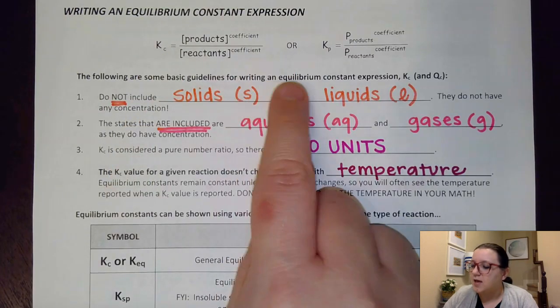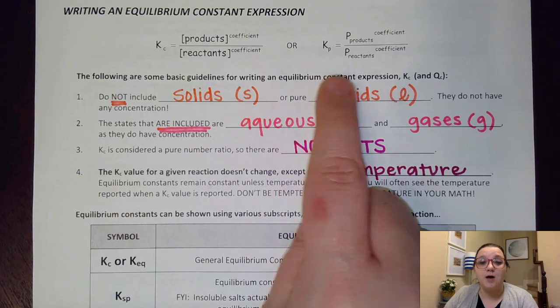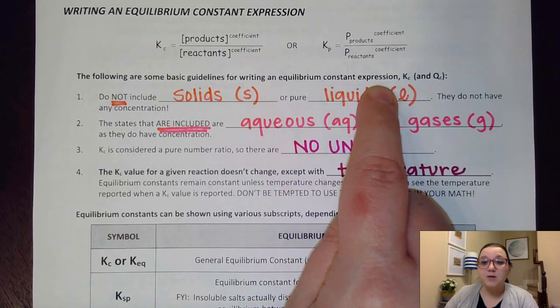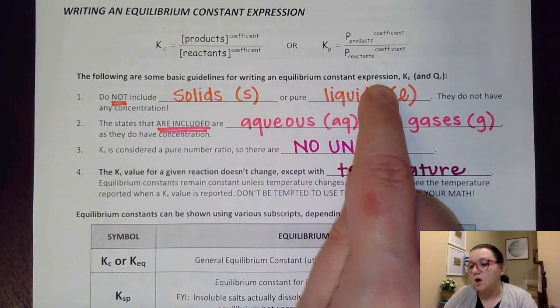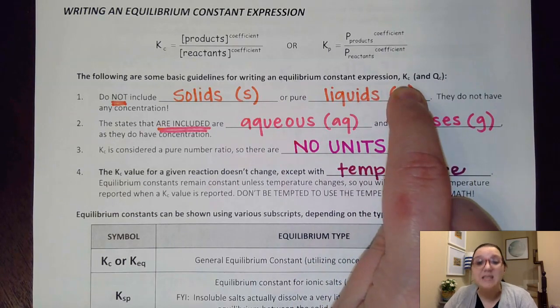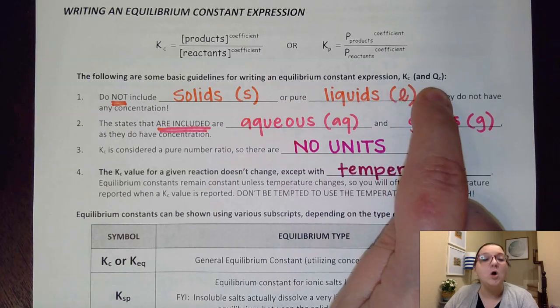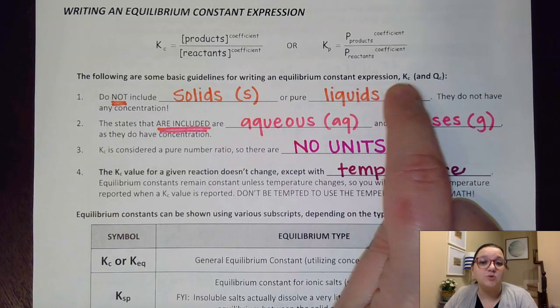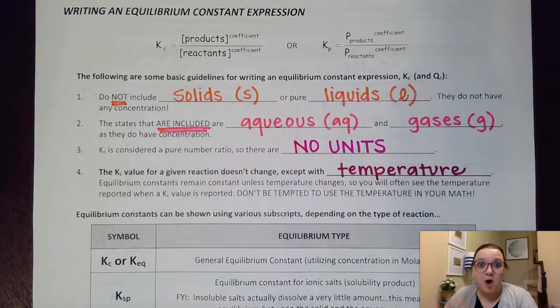However, there are certain states of substances that we would not include in this equilibrium expression, as well as there's some substitutions we can make in place of this C for concentration. We can also use these same rules for writing reaction quotients, because an equilibrium expression is a reaction quotient once we've reached equilibrium.